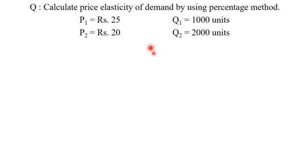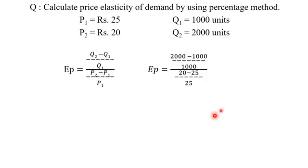Here, P1 is equal to rupees 25, P2 is rupees 20, Q1 is 1000 units, Q2 is 2000 units. According to the percentage method, we have to use the following equation: elasticity of price is equal to Q2 minus Q1 divided by Q1, whole divided by P2 minus P1 divided by P1.